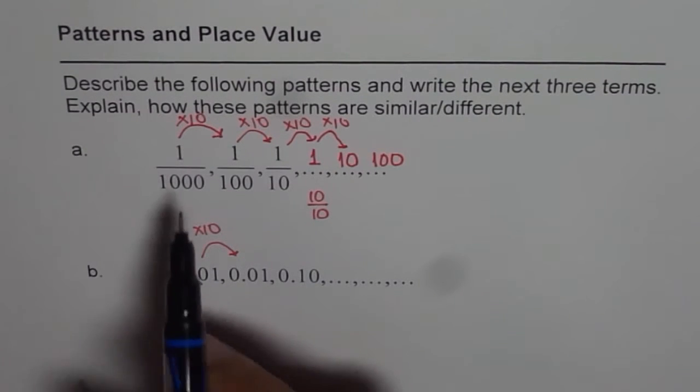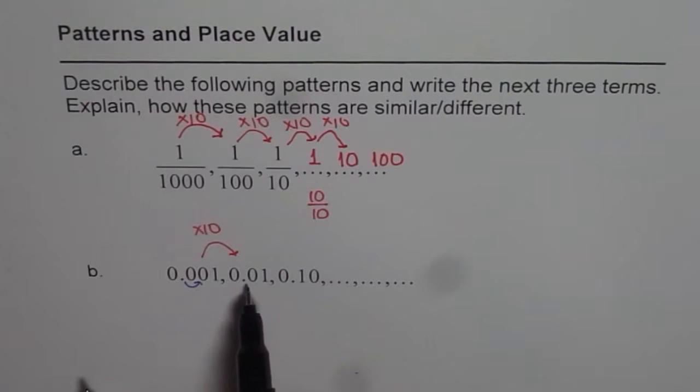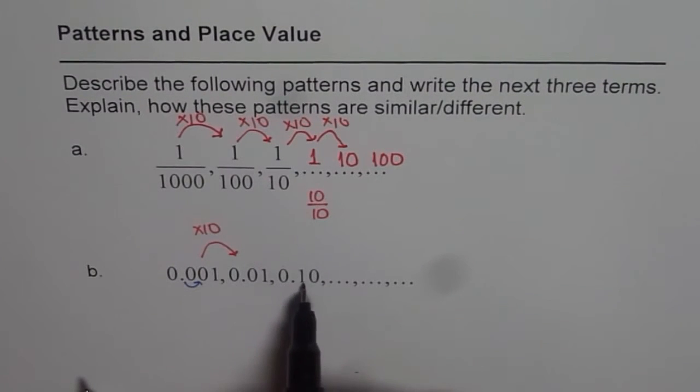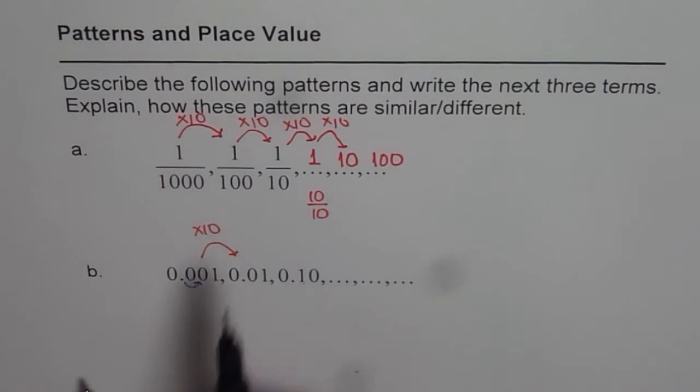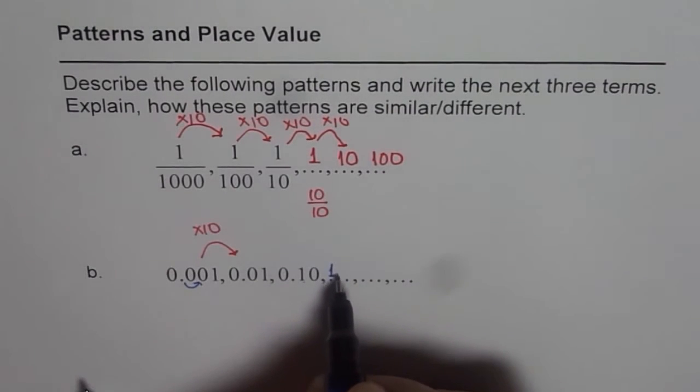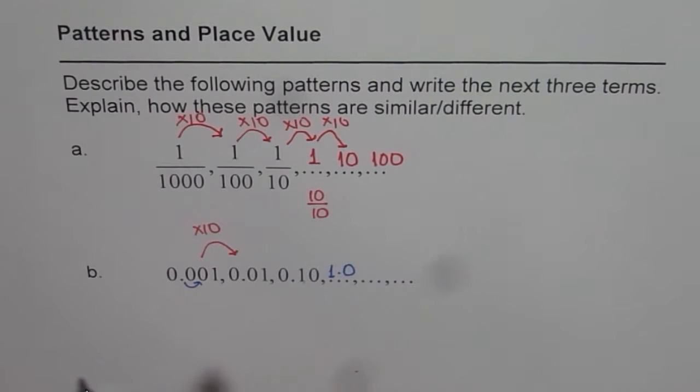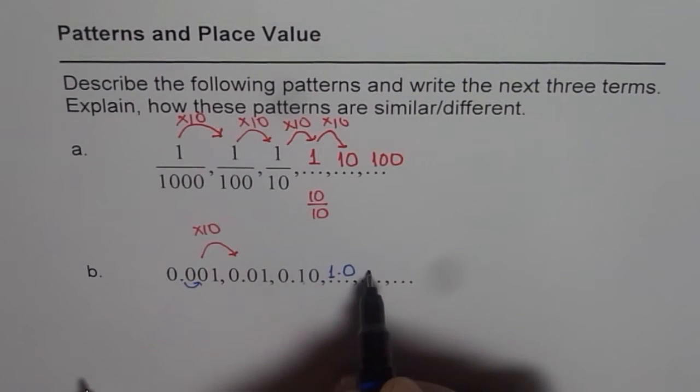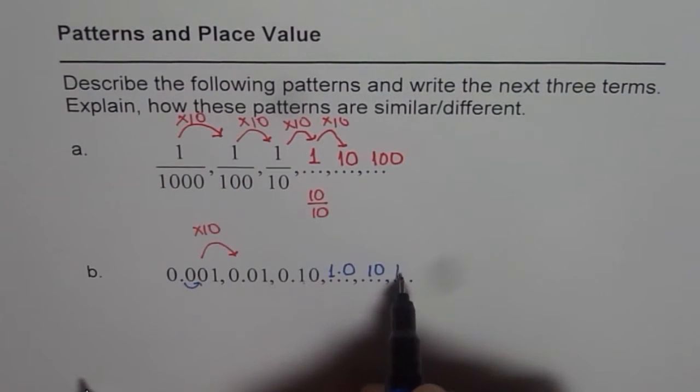This is 1/1000, same as that. 0.01 is same as 1/100. 0.1 is same as 1/10. The next number is, if I multiply 0.10 by 10, I get 1.0, which is 1, same as 1. Do you see that? And times 10 will give me 10 and then 100.